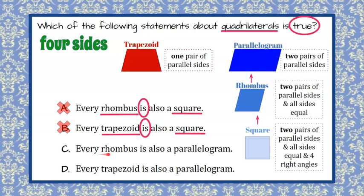Answer choice C, every rhombus is also a parallelogram. Well, this one is true. A rhombus has two pairs of parallel sides, which is what makes it a parallelogram. So all rhombuses are parallelograms that are just special because all four sides are the same. So I think it's choice C.